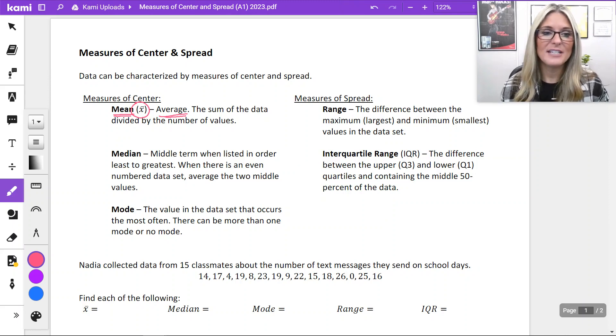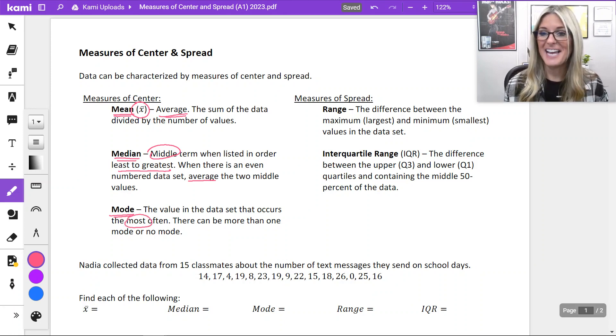The second measure of center is median. That is our middle term. When we list our numbers in order from least to greatest, when there's an even number of data set values, then you can average the two middle values together to find your median. The third measure of center that we have is mode, which is the value that occurs the most often in our data set. There can be more than one mode or there can be no mode.